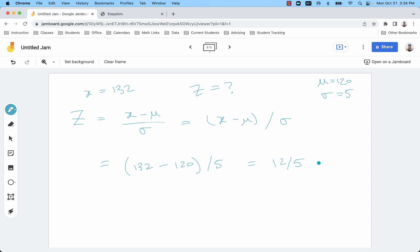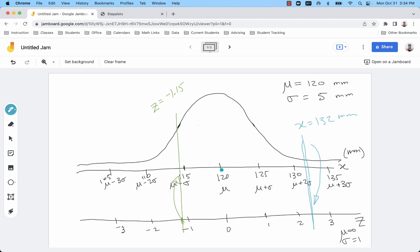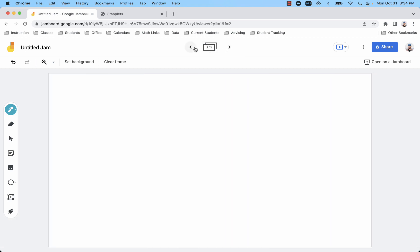I would have 132 minus 120 divided by 5. That's 12 over 5, or 2.4. So that would be my Z, 2.4 standard deviations, since it's positive, to the right. So you can count the tick marks: 1, 2, and then 4 tenths of the way.